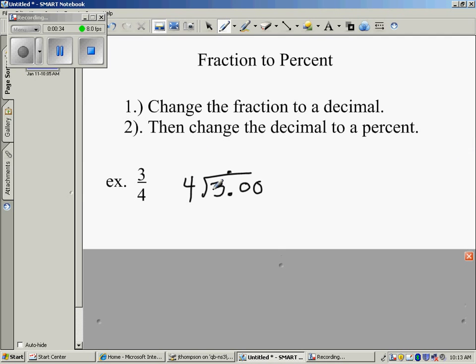How many times does 4 go into 3? It doesn't. How many times does 4 go into 30? It goes in 7 times. That gives us 28. We will subtract. We'll get 2 as a remainder.